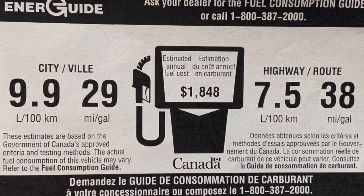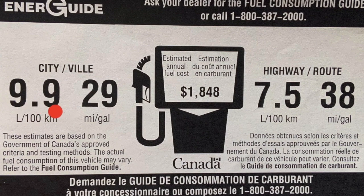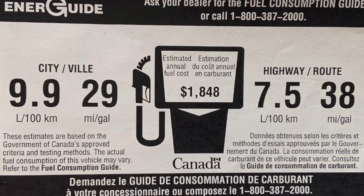When you look at new vehicles, they have a sticker in the window and one of the things on that sticker is the fuel efficiency. So we can see this particular vehicle is going to use 9.9 liters to drive 100 kilometers in the city and on the highway, it's going to use on average 7.5 liters to drive 100 kilometers.